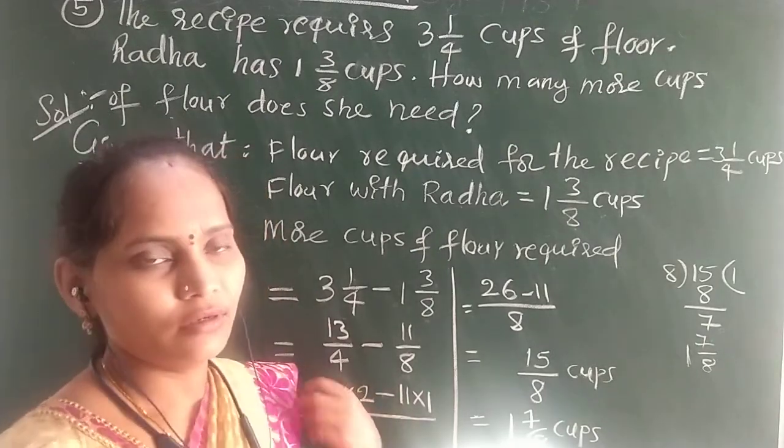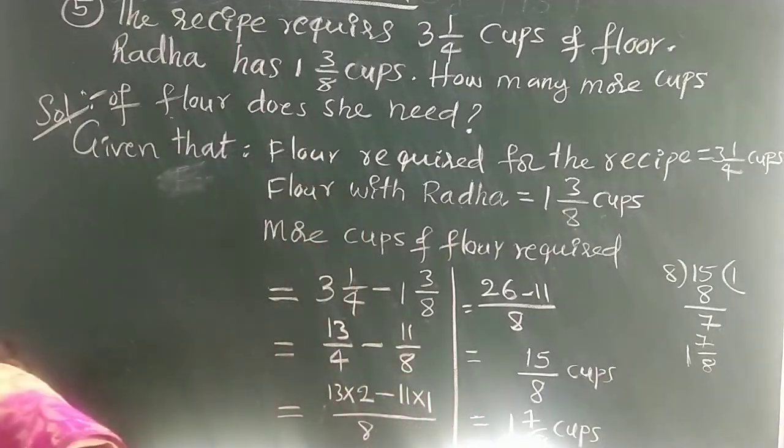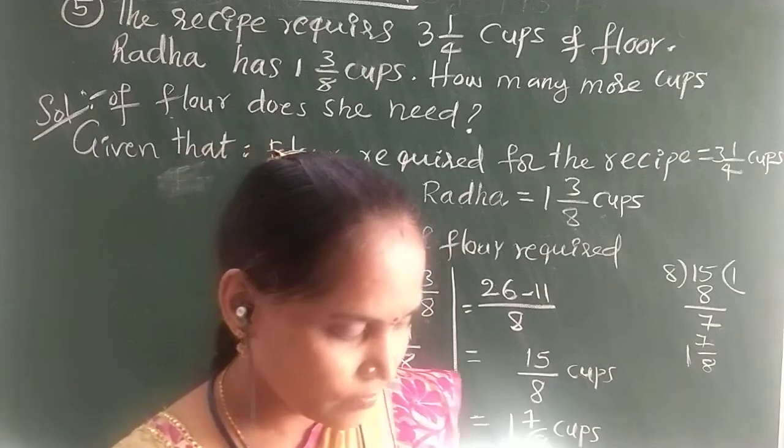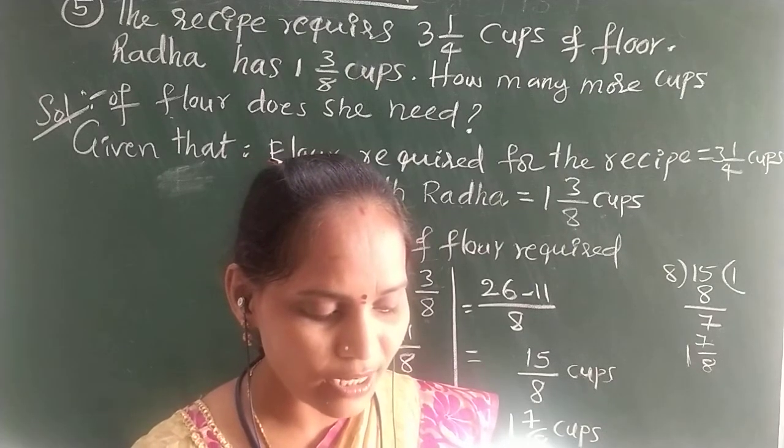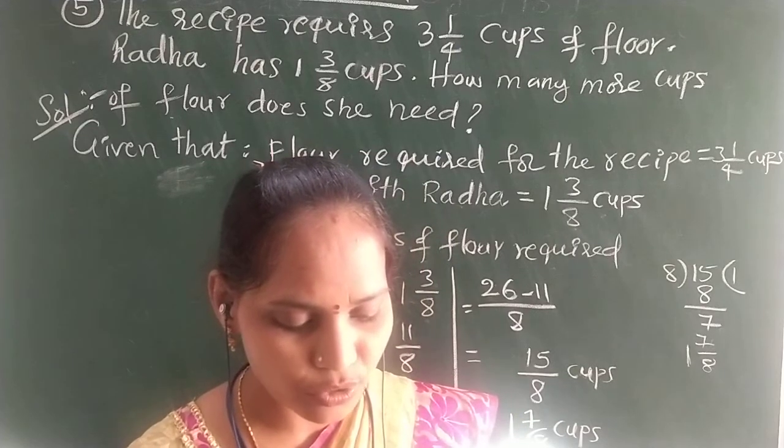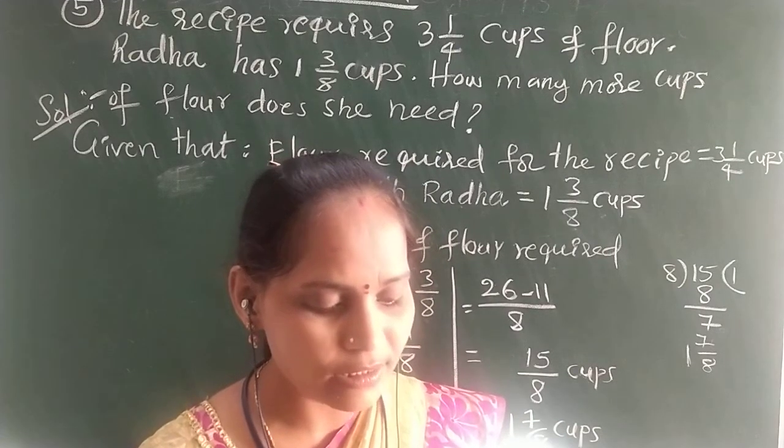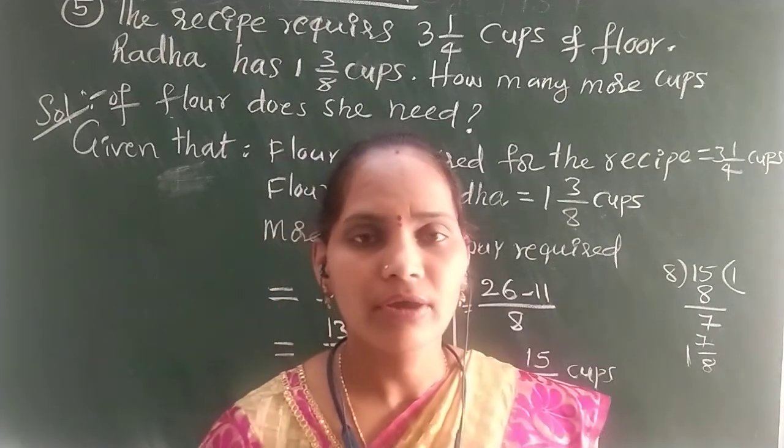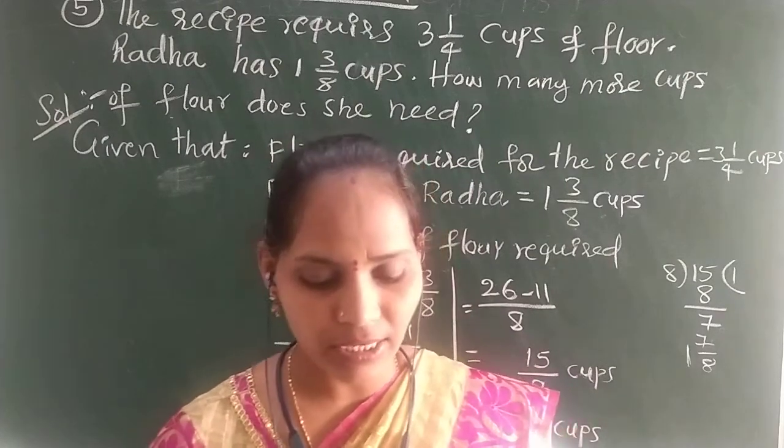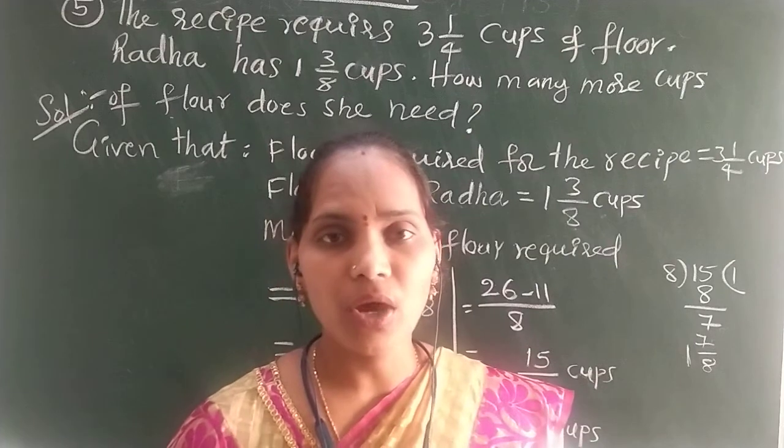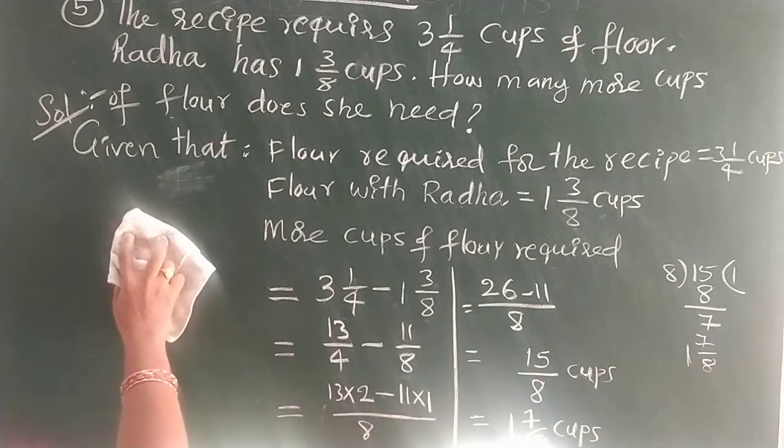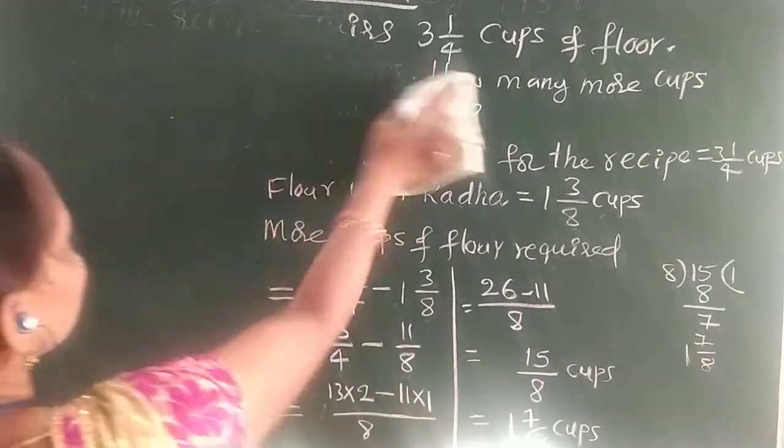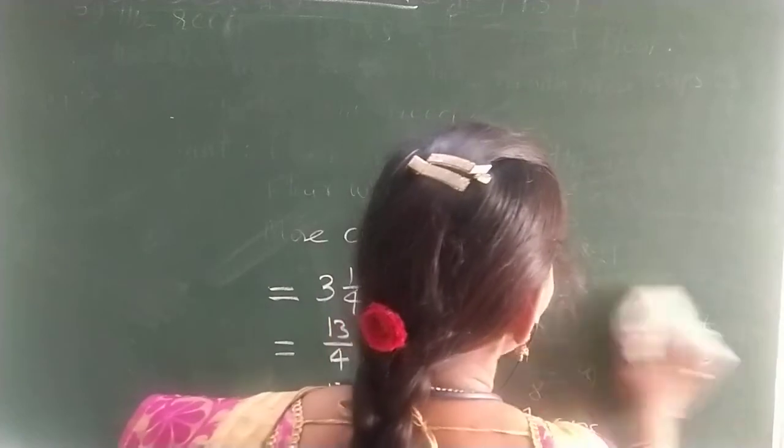Now I am going to explain next question. Next question I am reading. 6th question, the textbook is given. Abdul is preparing for his final exam. He has completed 5/12 part of his course content. Find out how much course content is left. Left content we need to find out. From total content, you have to subtract what he has completed. That content you have to subtract, then you will get the left content. Very simple.